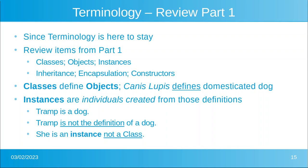First of all, there are classes. These things define objects. So in the example of the dog, Canis lupus is the class, and the actual domesticated dog would be an object. Instances are individuals created from those definitions. So in my case, Tramp is a dog. She is an instance of the class — she is not the class. Let's make sure we understand the difference between instances and objects.